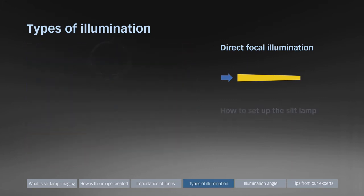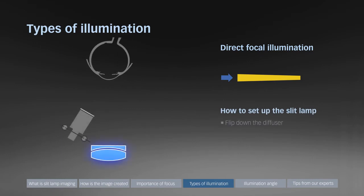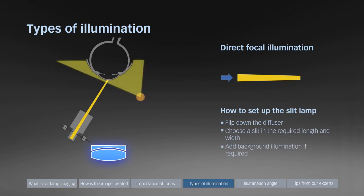To set up the slit lamp for direct focal illumination, flip down the diffuser, choose a slit in the required length and width, and add a small amount of background illumination if required.